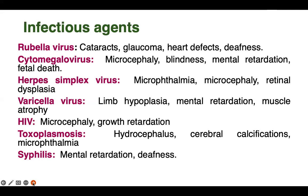Among these are rubella virus, cytomegalovirus, herpes simplex virus, and toxoplasmosis. Together, these are called TORCH infections. Many times patients come to OPD with a history of multiple abortions along with TORCH infection, and when we do the TORCH test, it comes back positive.